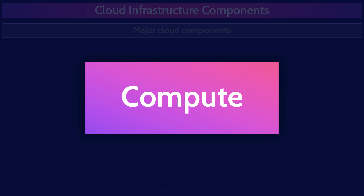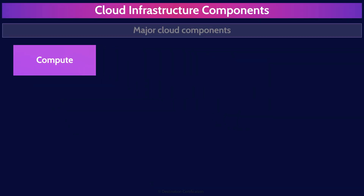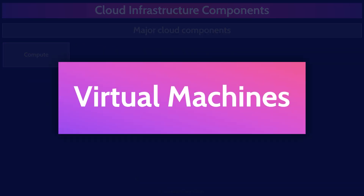Compute is essentially the ability to run code. As mentioned in the resource pooling characteristics in the very first mind map, you don't typically have direct access to a physical server and physical CPU in the cloud. So how do you access compute? How do you run your code and your applications? The answer is you have access to various types of virtualized compute, such as virtual machines, containers, and serverless. Let's start with virtual machines.